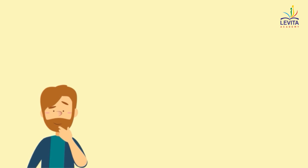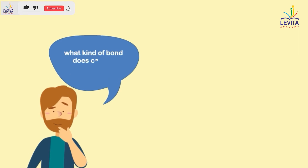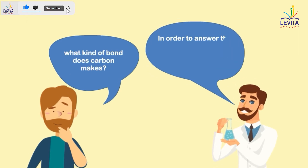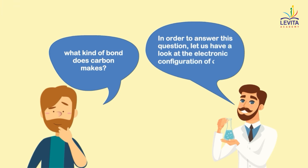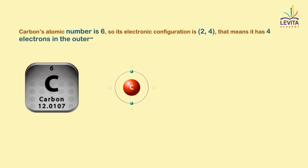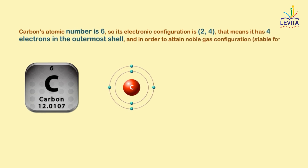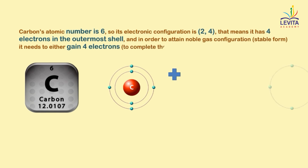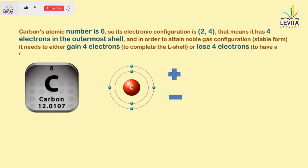Now, the question is: what kind of bond does carbon make? In order to answer this question, let us have a look at the electronic configuration of carbon. Carbon's atomic number is 6, so its electronic configuration is 2, 4. That means it has 4 electrons in the outermost shell, and in order to attain noble gas configuration, it needs to either gain 4 electrons or lose 4 electrons. So, we have two scenarios.